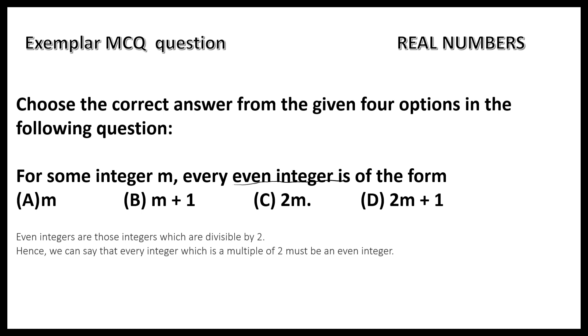Now let us take an integer say 7. 2 × 7 that is 14 which is an even number. Now let us have the number 10. 2 × 10 that is also even.